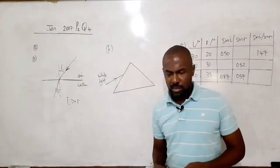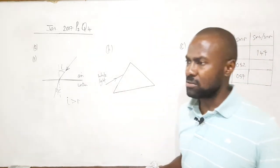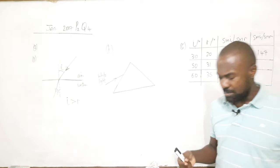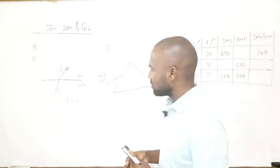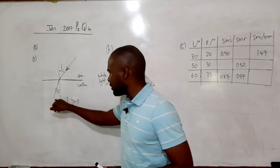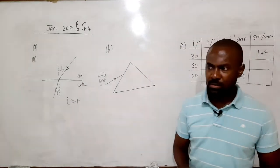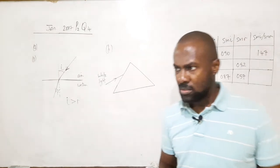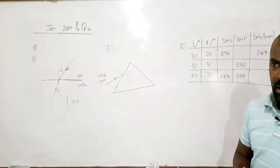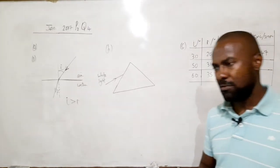Light travels slowest in denser materials. The speed of light in air is approximately 3.0 × 10⁸ meters per second, which is roughly the same as the speed of light in a vacuum. Therefore, when light travels in any material medium, its speed will always be less than the value in air or in a vacuum.